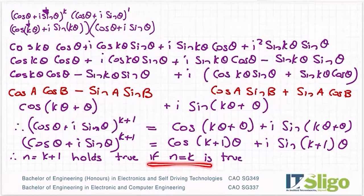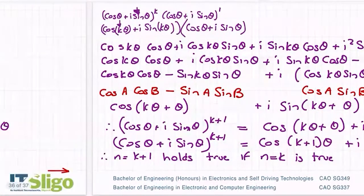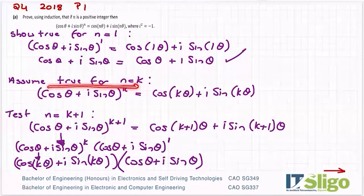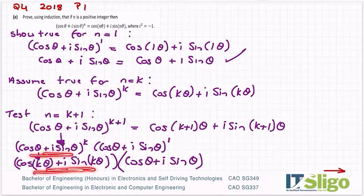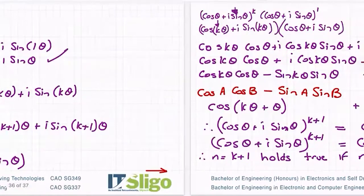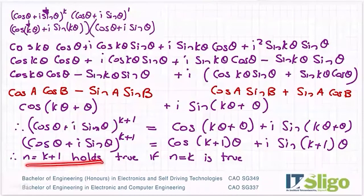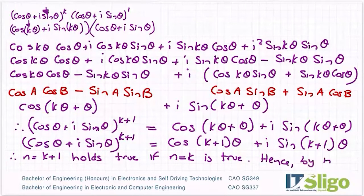So we've just proven it is true if N is equal to K is true. So why do I have to say this bit? Well, I have to say that bit because I assumed that was true and I used it as part of my proof. So therefore, my proof for N is equal to K plus one is only true, assuming this is true. So that's what I'm saying here. N is equal to K plus one holds true if N is equal to K is true.